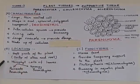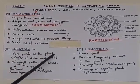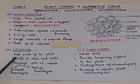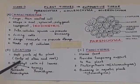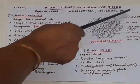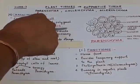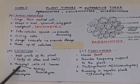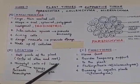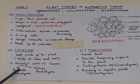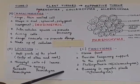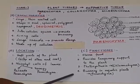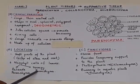Parenchymatic cells can be found in the soft parts of the plant — in the cortex of the stem and root. The cortex is the outermost layer, and the pith is the inner layer near the vascular bundles. They are also present in the mesophyll cells of the leaves.